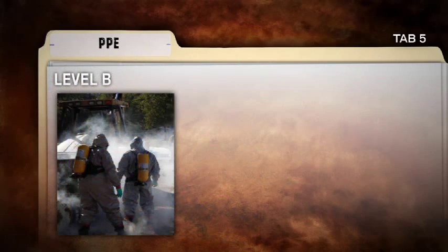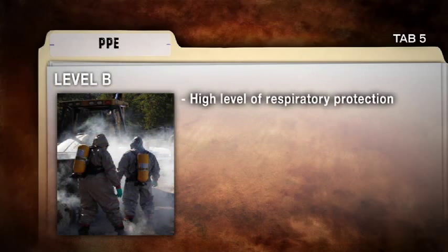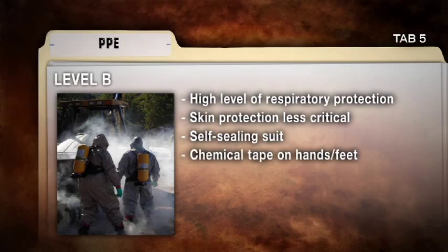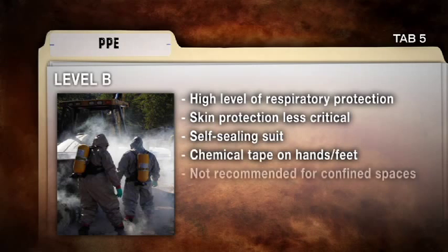Level B protection should be used when a high level of respiratory protection is required but skin protection is less critical. Level B provides a high degree of respiratory protection by incorporating a self-sealing suit or chemical-compatible tape on the openings for feet and hands. However, Level B protection is not recommended for confined spaces.